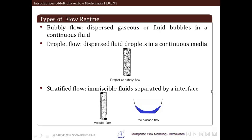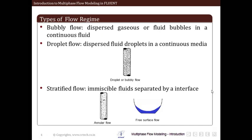Let us see some commonly observed or classified flow regimes. The first type is bubbly flow — dispersed gaseous or fluid bubbles in a continuous fluid, where bubbles are dispersed throughout the continuous medium. The second is droplet flow, in which there are dispersed fluid droplets in a continuous medium instead of gaseous bubbles. In droplet flow you have mostly fluid droplets whereas in bubbly flow you have gaseous bubbles.